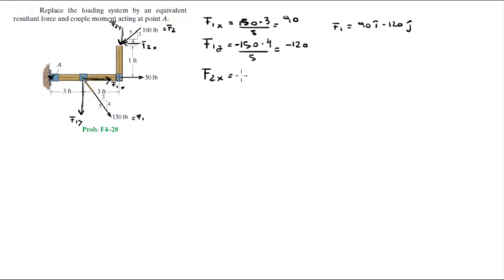F of 2 in the X is equal to 100 times 4 over 5, and it's going towards negative towards the left, so that means that it is equal to negative 80. And F of 2 of Y is equal to minus, because it's going down, 100 times 3 over 5, and it comes out to be negative 60 in the J. So F of 2 is equal to minus 80i minus 60j.